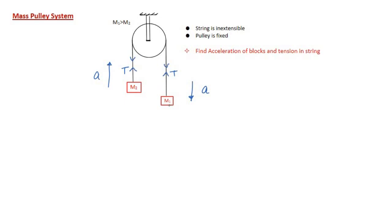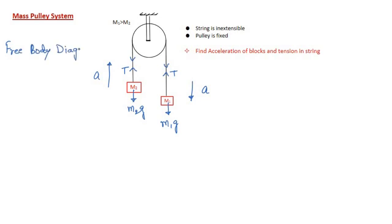Gravity m1·g acts in the downward direction on m1, and m2·g acts downward on m2. Now let us draw the free body diagram and solve the equations to get the values of a and T.